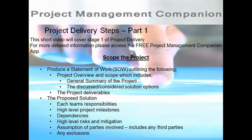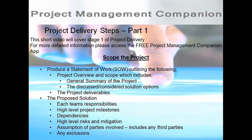Stage 1: Scope the project. This involves the following. Produce a statement of work, or SOW for short, outlining the following: project overview and scope — this is the general summary of the project, in part made up of discussions or considered solution options you have with your customer. Then you should outline the project's deliverables.